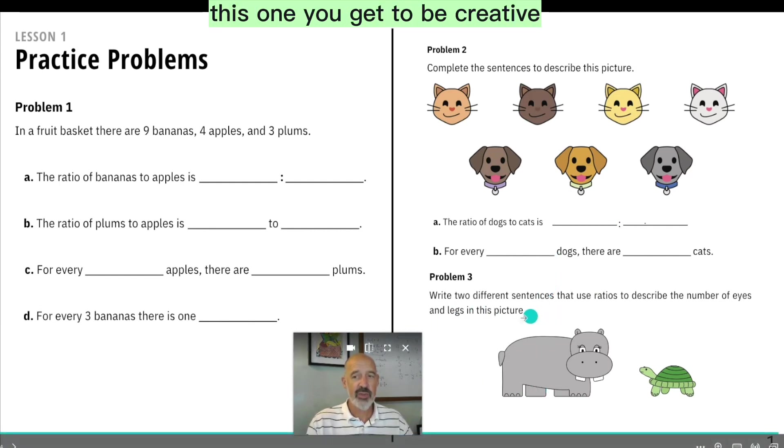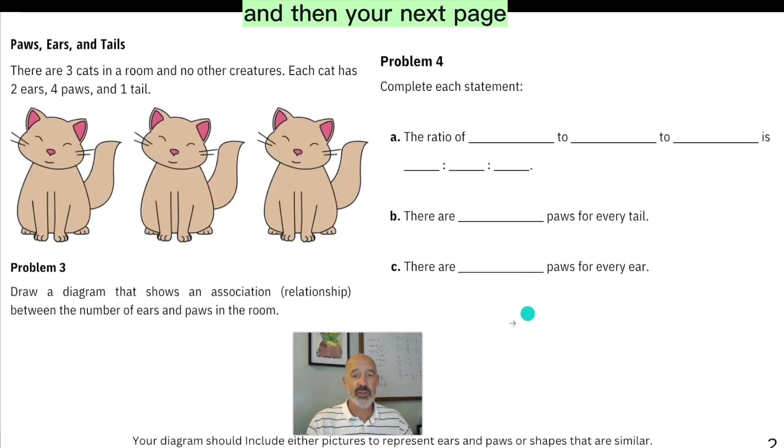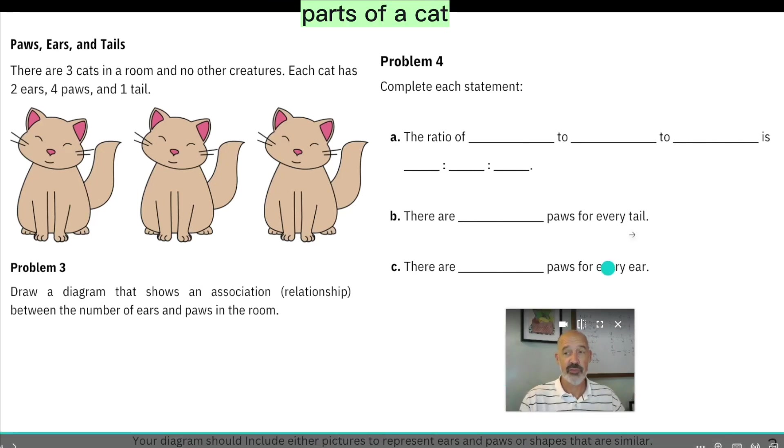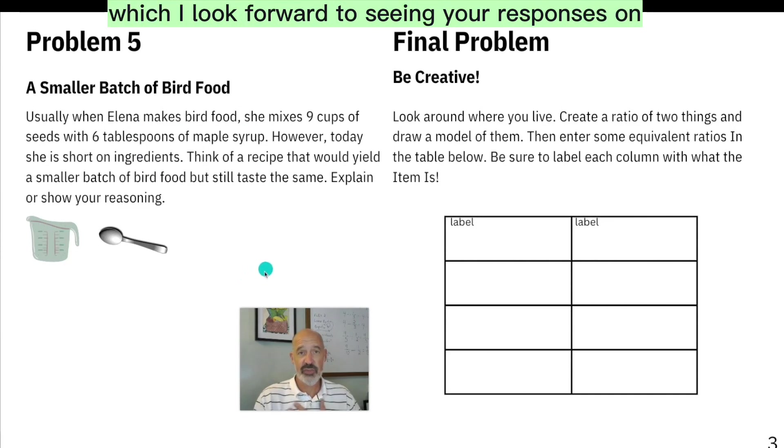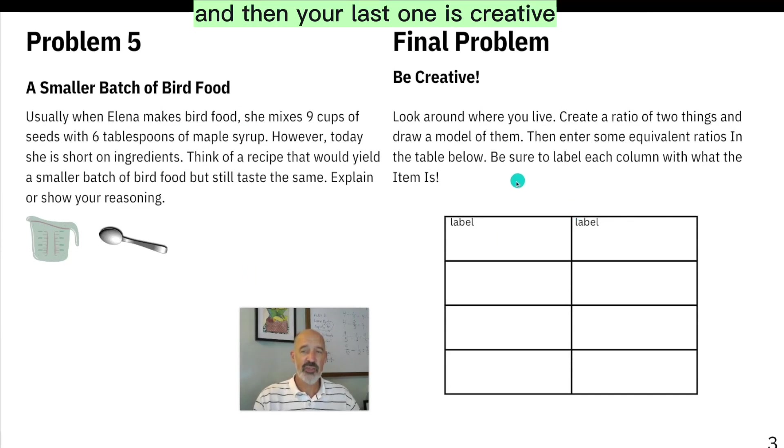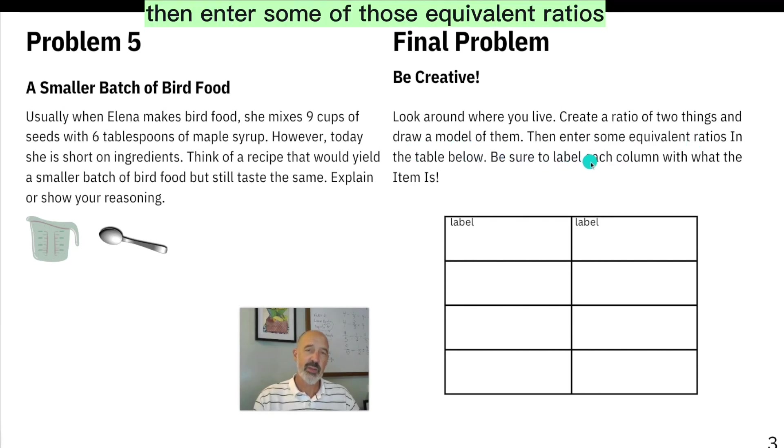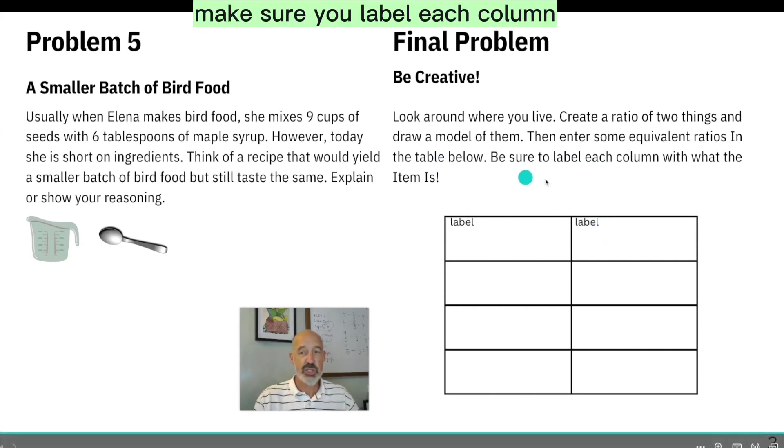This one you get to be creative in writing two different sentences that use ratios to describe the number of eyes and legs in this picture. And then your next page is dealing with cats and ratios of parts of a cat. And then finally, there is one question about making batches of bird food, which I look forward to seeing your responses on. And then your last one is creative. We get to look around where you live and create a ratio of two things and draw a model of them. Then enter some of those equivalent ratios in this table.